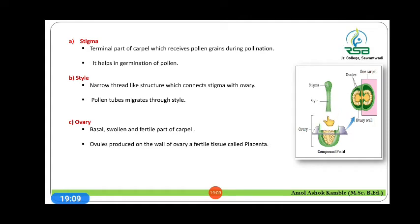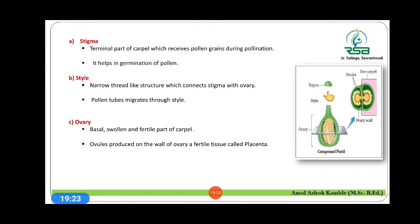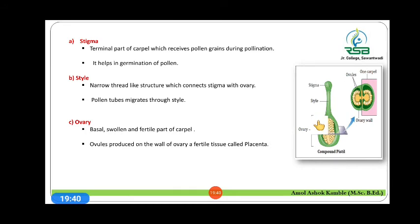The style is the narrow thread-like structure which connects the stigma with the ovary. The pollen grains migrate through this stylar portion. The last and most important feature of the gynoecium is the ovary. It is the basal, swollen and fertile part of the carpel. It produces ovules on the wall of the ovary with the fertile tissue.